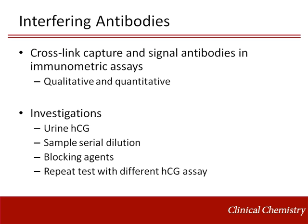Serial dilution of the sample can also be useful. Because interfering antibodies are reactive against the assay reagents and not HCG, samples that contain them may produce HCG results that deviate from the expected dose response. Blocking agents work by absorbing the interfering antibodies from the sample, thereby preventing their interference in immunoassays; however, their effectiveness depends on numerous variables including the interfering antibody class, specificity, and concentration. Repeating the test using a different HCG immunoassay — particularly one that utilizes antibodies produced from a different animal species — can be helpful as well.